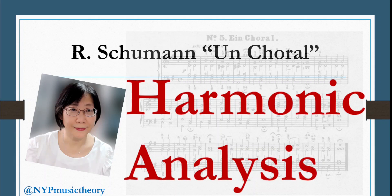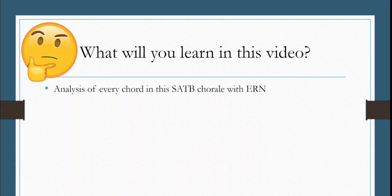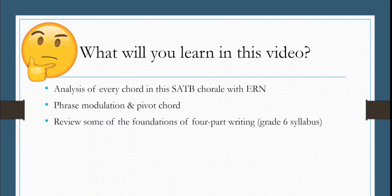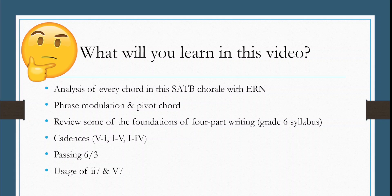What would you learn from this video? First of all: analysis of every chord in this SATB Chorale with Extended Roman Numerals. No. 2, Phrase Modulation and Pivot Chord. No. 3, review some of the foundations of four-part writing. No. 4, cadences 5-1, 1-5, and a very seldom used 1-4, passing 6-3, and usage of 2-7 and 5-7 chord.